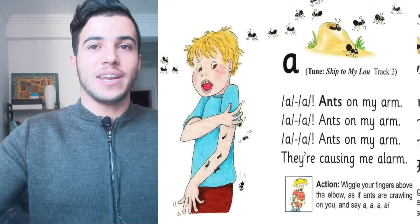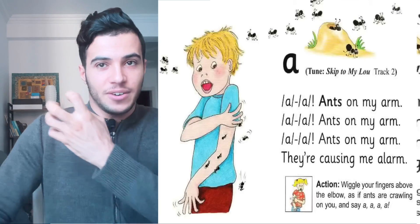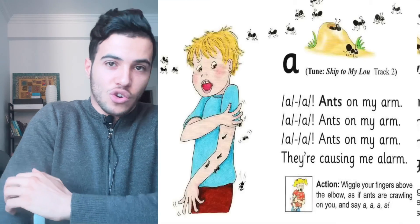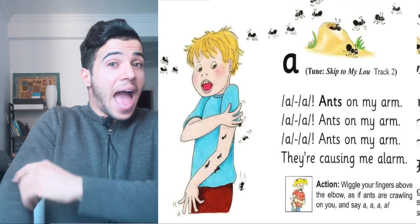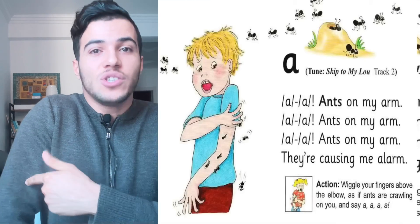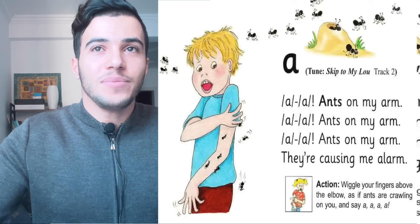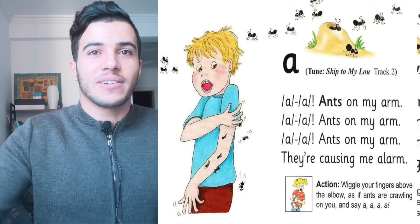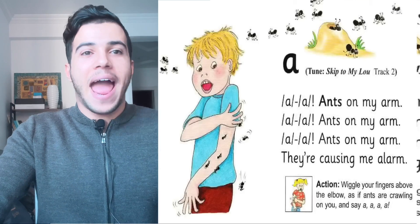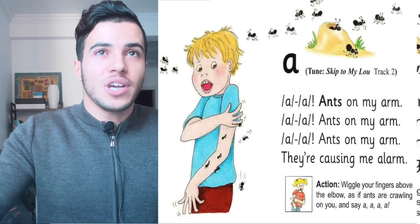The action for this sound is to wiggle your fingers up your arms as if ants are crawling on you, and say 'Ah! Ah!' This action is useful while writing. Ants on my arm!